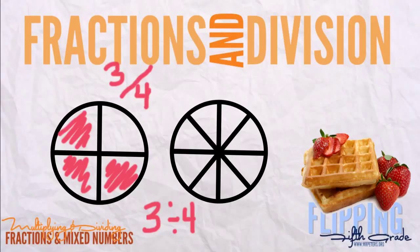So in other words if you have 3 waffles and you want to divide them among four people, each person would get 3/4 of a piece of waffle.